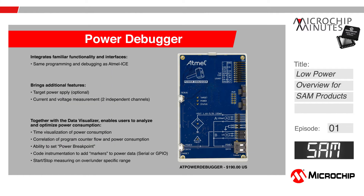The Power Debugger is a powerful development tool for debugging and estimating the power consumption on your design. It has two independent current sensing channels for measuring and optimizing the power consumption. The Power Debugger also includes a CDC virtual COM port interface as well as data gateway interface channels for streaming application data to the host processor from an SPI, UART, TWI, or GPIO source. The part number is AT Power Debugger and the price is $190 US.